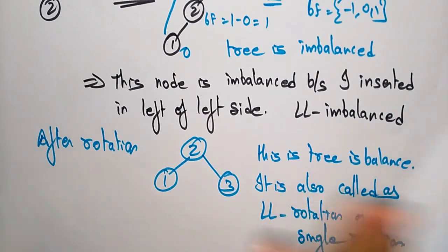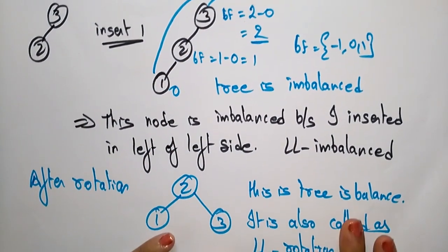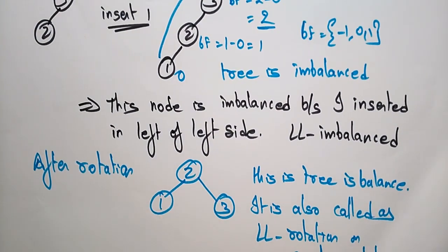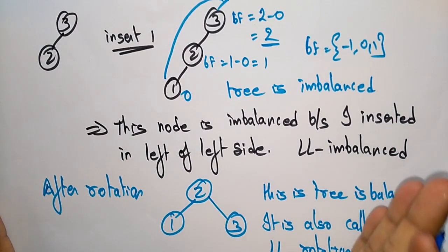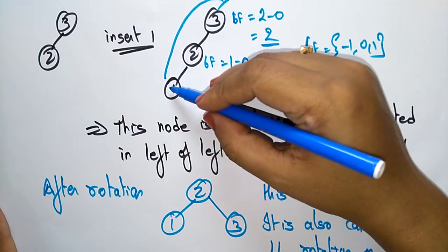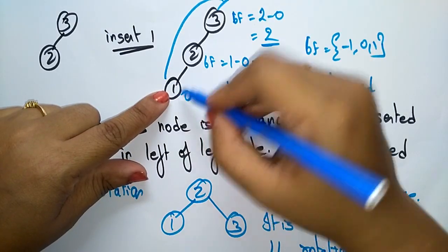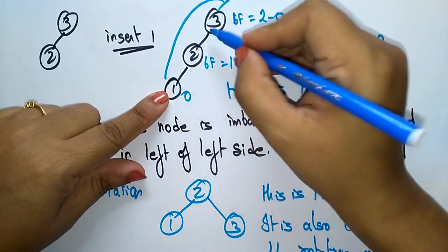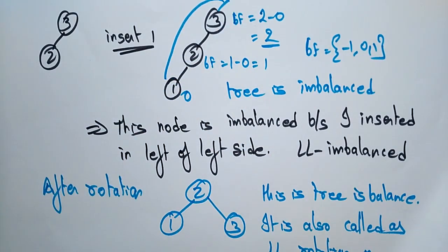This is one way of doing rotation. There are four types of rotations: left-left rotation, left-right rotation, right-right rotation, and right-left rotation. This was the first type. Whatever node is imbalanced, we perform the left-left rotation when the insertion happens on the left of the left side — that is why the name is left-left rotation, also called single rotation. Thank you.